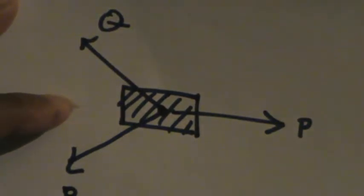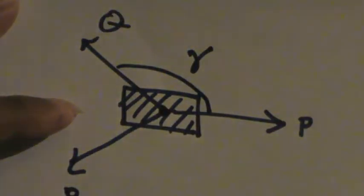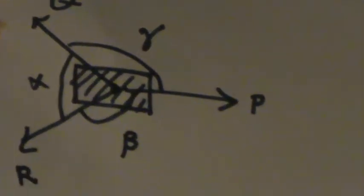The angles between these are: this angle is gamma, this angle is alpha, and this angle is beta. So what I will do is separate this into a point mass. The forces will be like this — this is P, this is Q, and this is R. This is alpha, this is beta, and this is gamma.